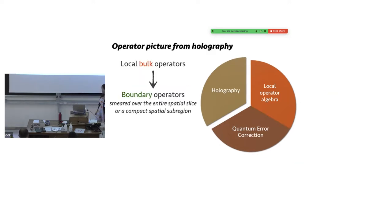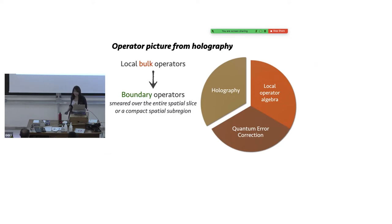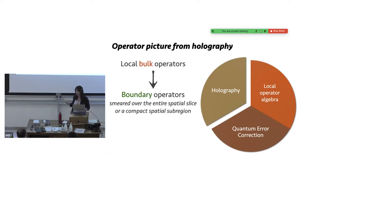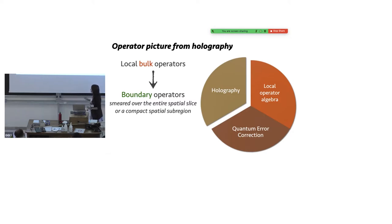I'm going to utilize an algebraic perspective. From the holographic picture, I'm going to take the essence coming from operators so that from the bulk we can have local bulk operators, which will give rise to non-local boundary operators. More specifically, technically important throughout the talk is that it's a boundary operator smeared over the entire spatial slice or a compact spatial sub-region. I really emphasize compact here — otherwise I can't work with this at all.